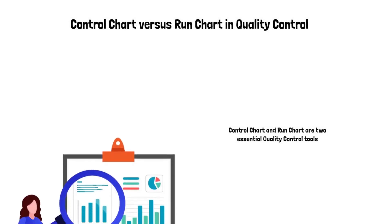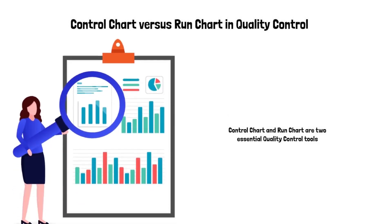Control chart and run chart are two essential quality control tools. Both of them are used for evaluating and analyzing quality results within a project or a process. When you look at these charts, you will have an insight into the health of the process.